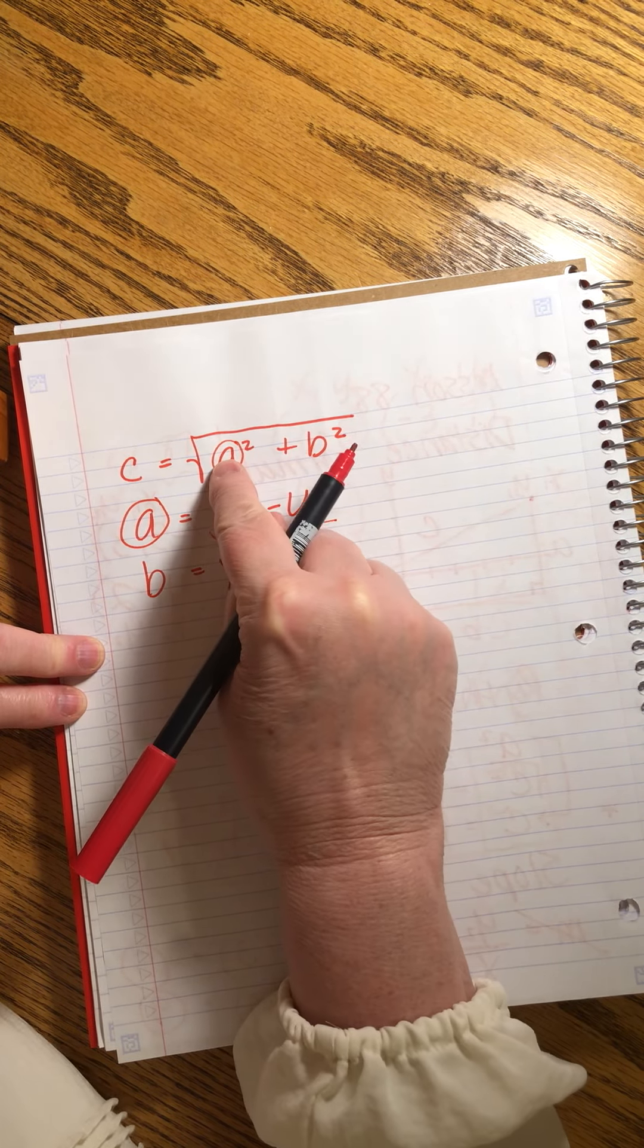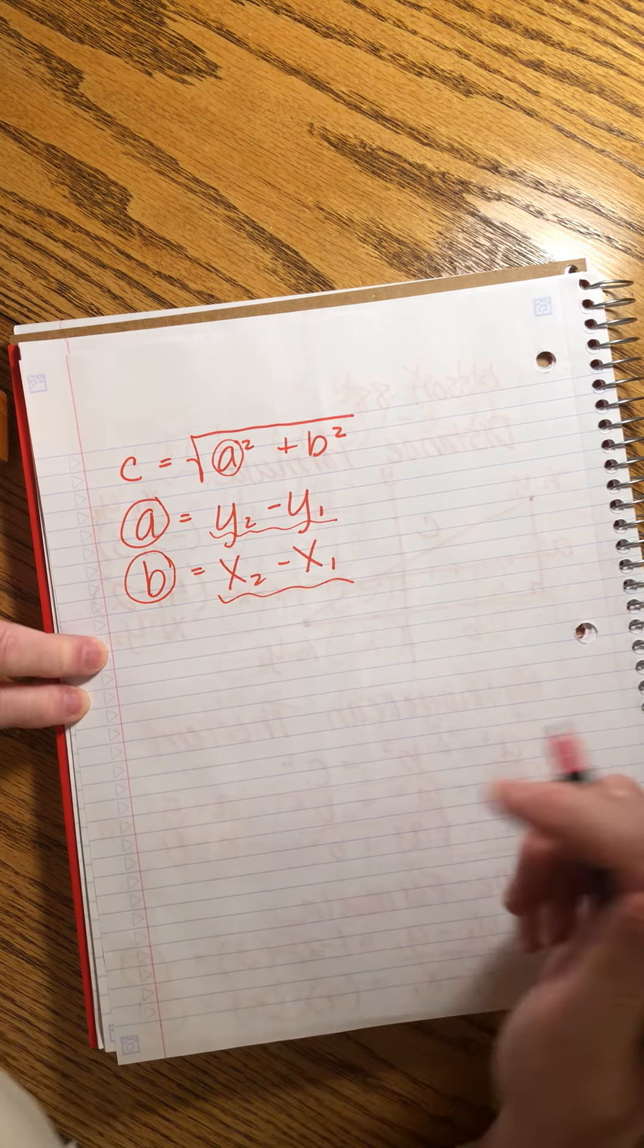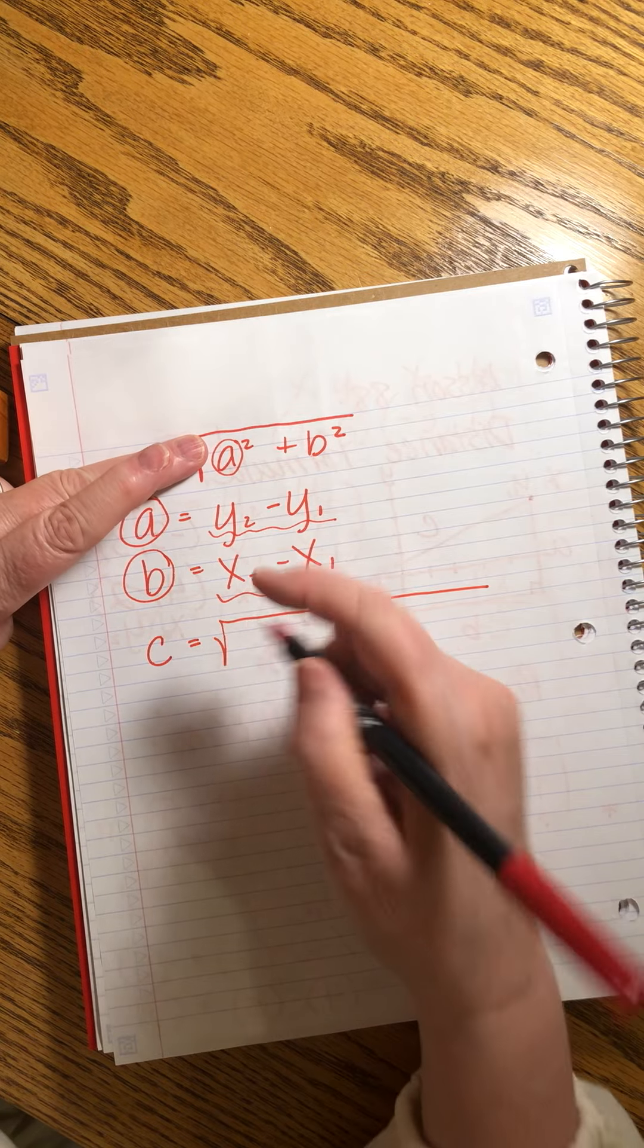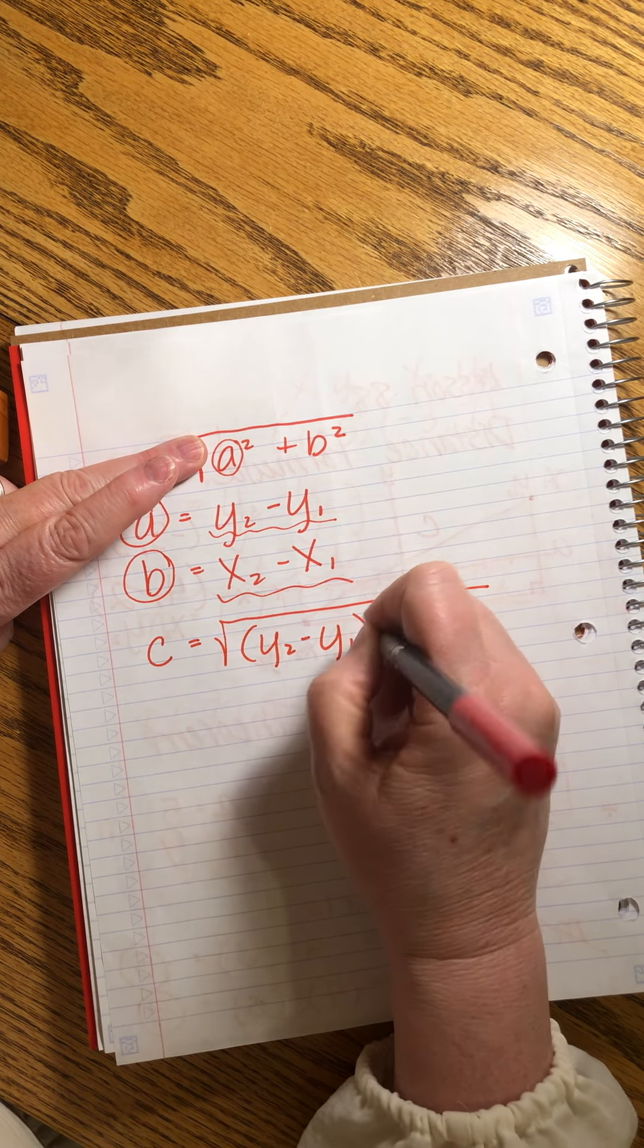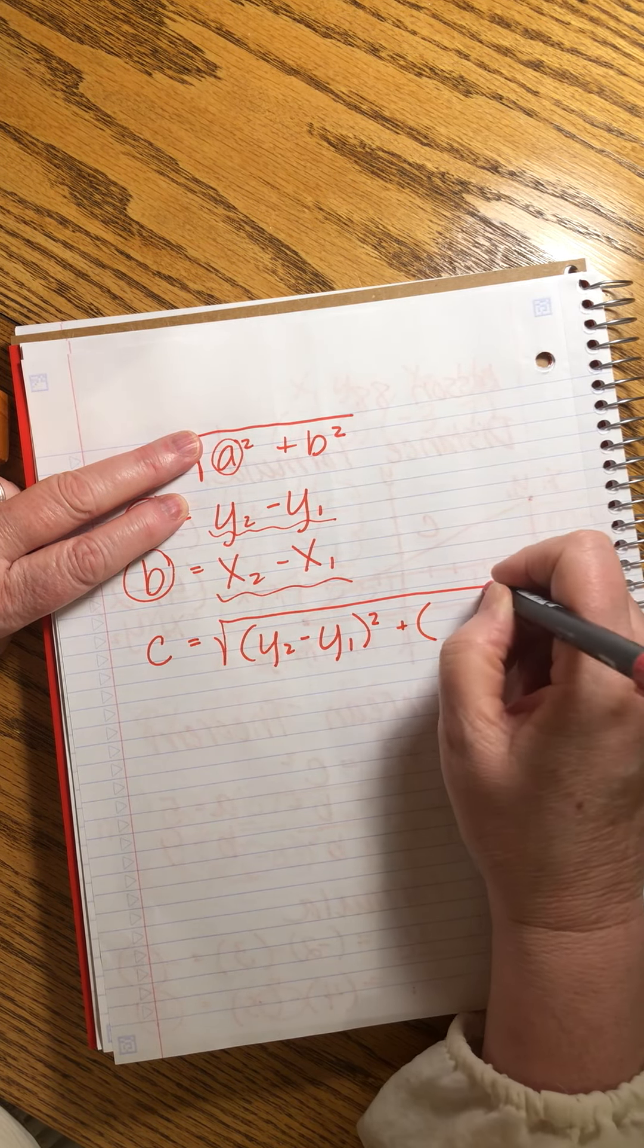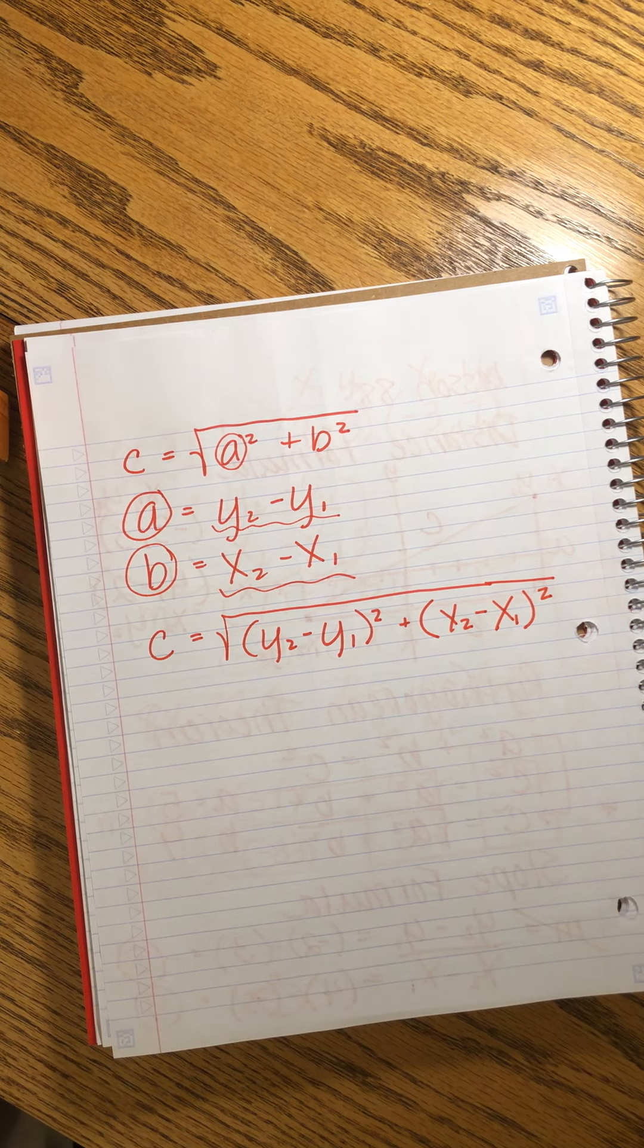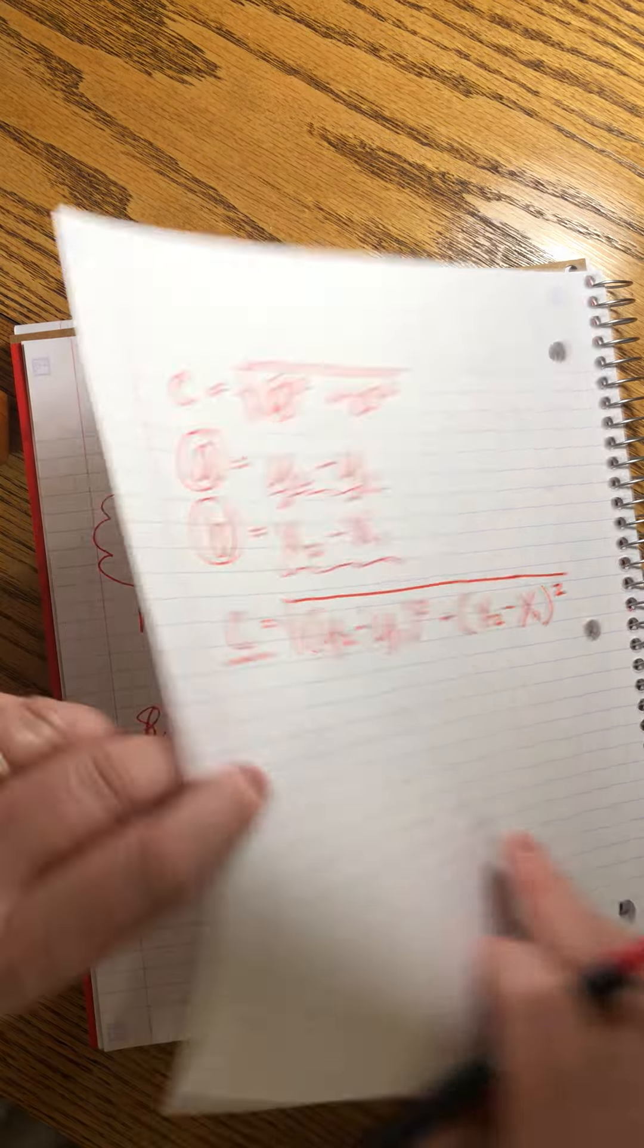So now what we're going to do is substitute this expression for a into this formula and this expression for b up here. We're almost done. So now we can say that c equals instead of a we're writing this y2 minus y1 squared plus and now instead of b we're writing x2 minus x1 squared. We're almost done. The hard part is done.